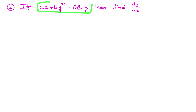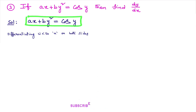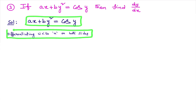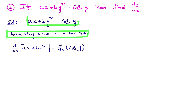Observe question number 3: if ax + by² = cos y, then find dy/dx. First, identify whether the given function is implicit or not. Is y clearly stated in terms of x? No, so it is an implicit function. Once you identified it is implicit, you differentiate it with respect to x on both sides.